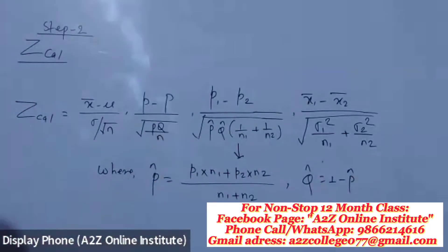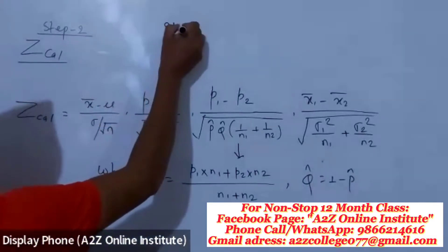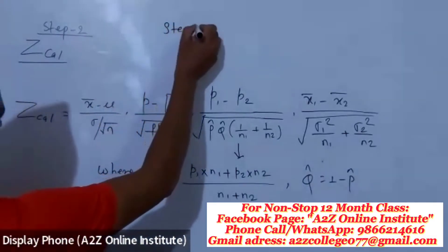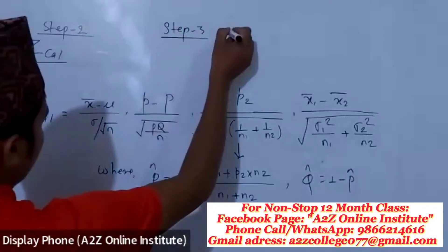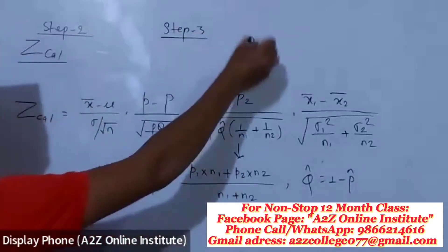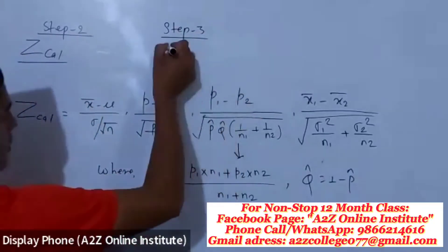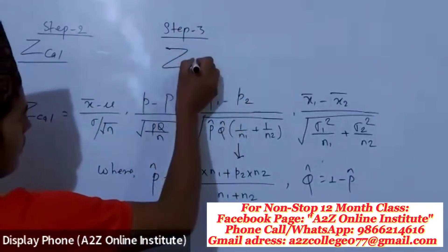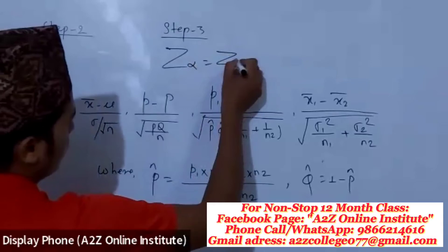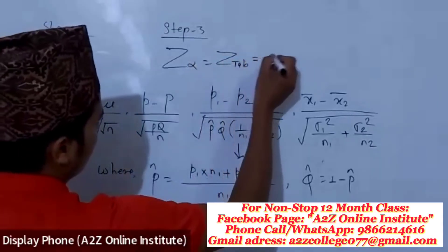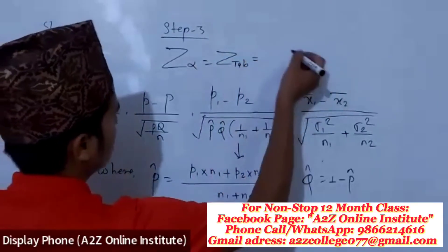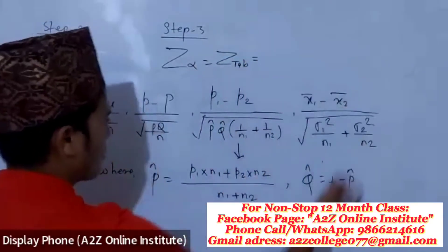Step 3: the level of significance. The Z tabulated value at a 5 percent level of significance.